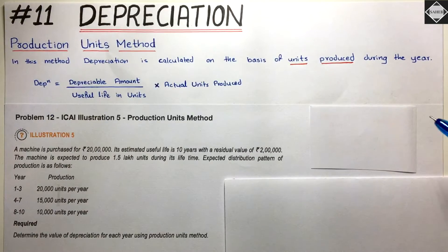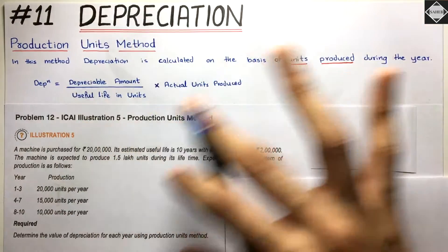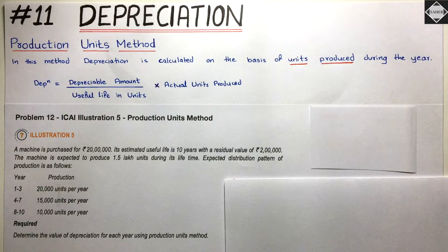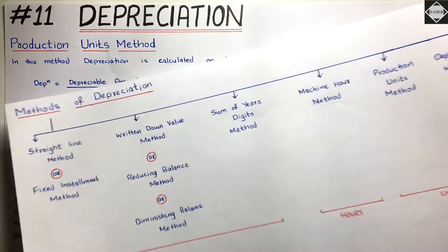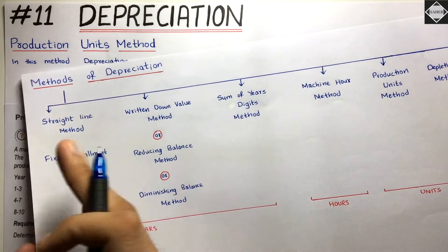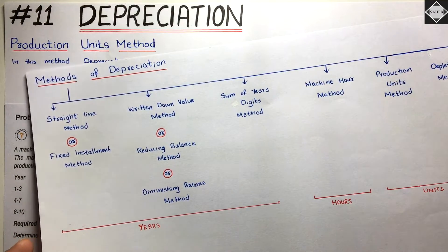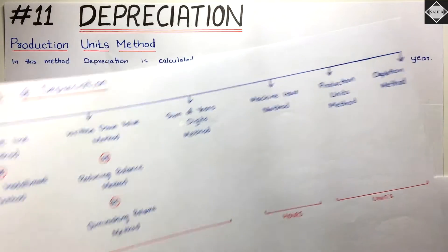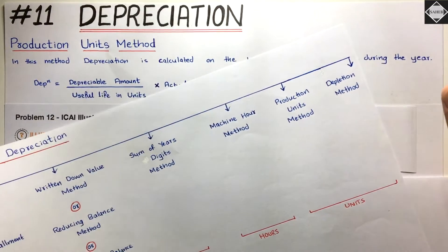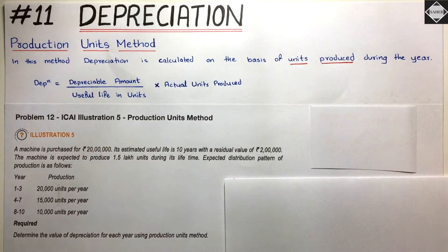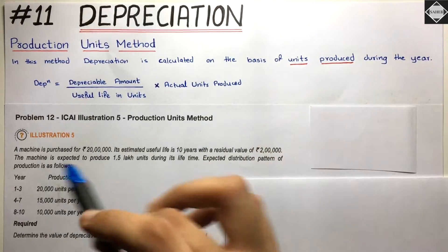The entire calculation will be dependent upon how many units the machine can produce. The accounting treatment is the same as the previous method — it's not different. It's just that the way of calculation is a bit different.